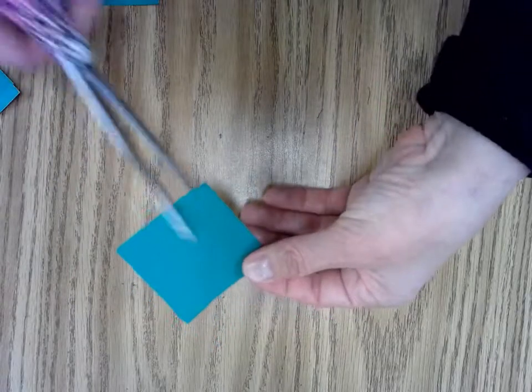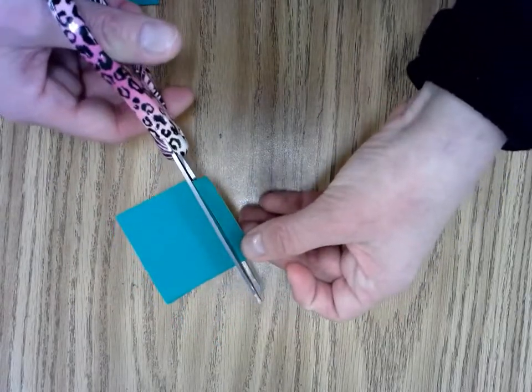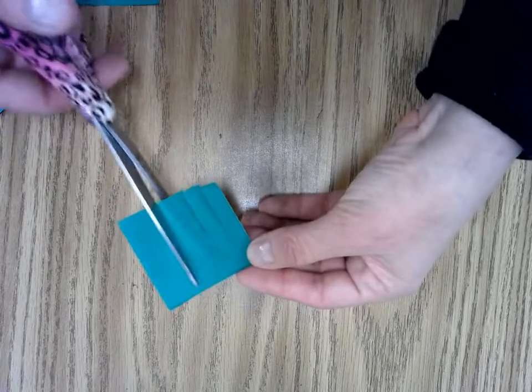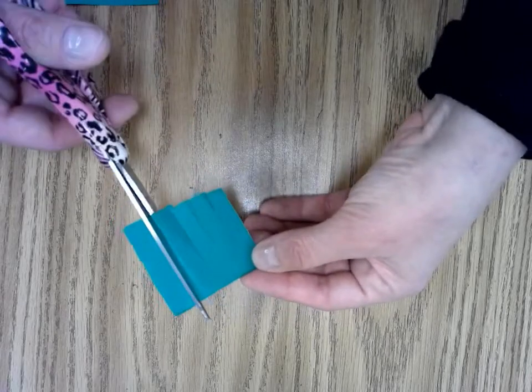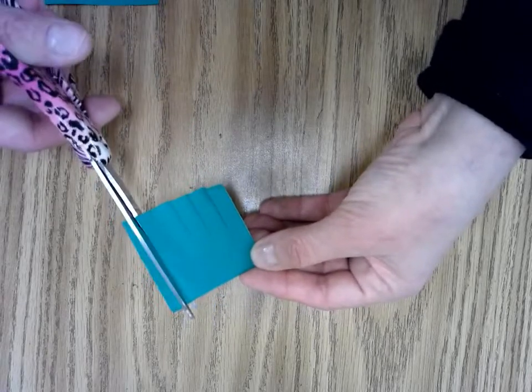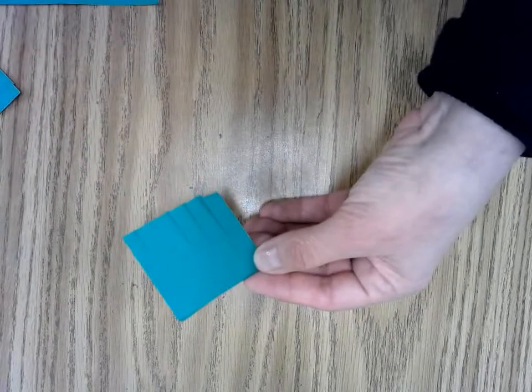You're going to cut straight lines toward the end of your paper but not all the way through. It doesn't matter really what kind of size you'd like them to be.